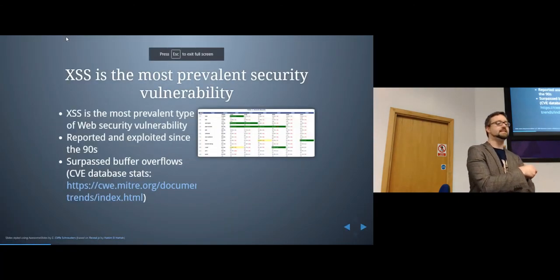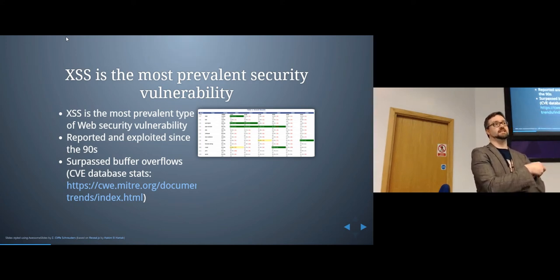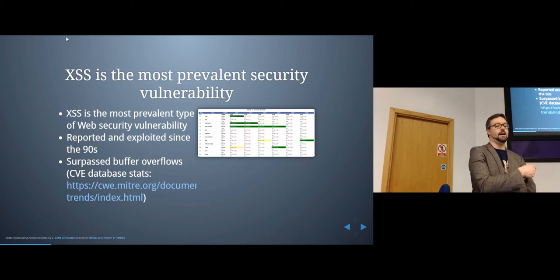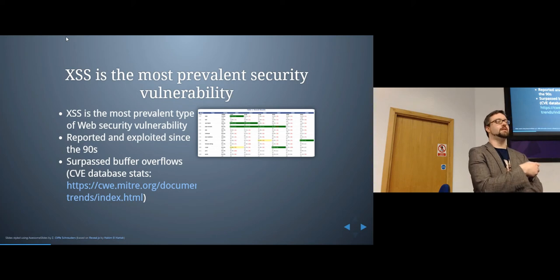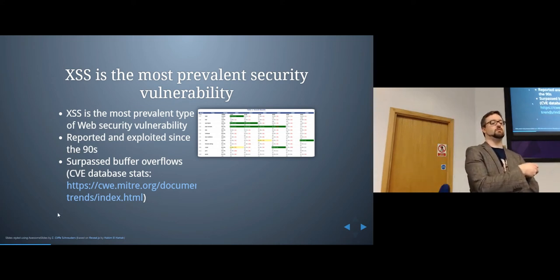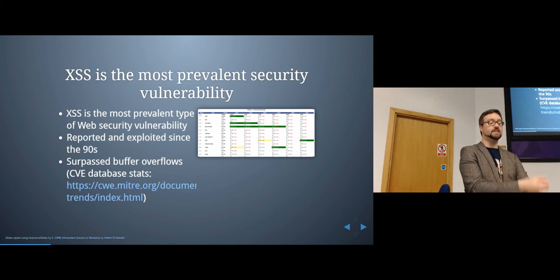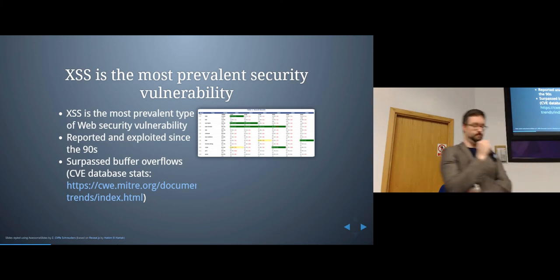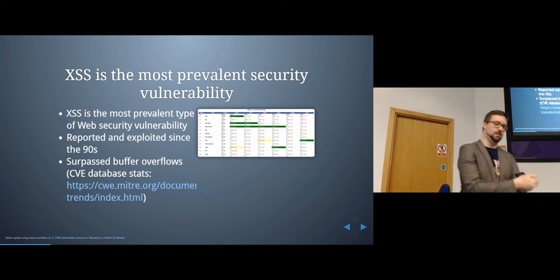Cross-site scripting is actually the most prevalent security vulnerability that exists. It used to be that buffer overflows were most common — for a long time, because when servers are written in C it's easy to make a programming mistake resulting in a buffer overflow. But more and more software is being created as websites, and it's really easy to end up with a cross-site scripting vulnerability. They've been reported and exploited since the 90s.